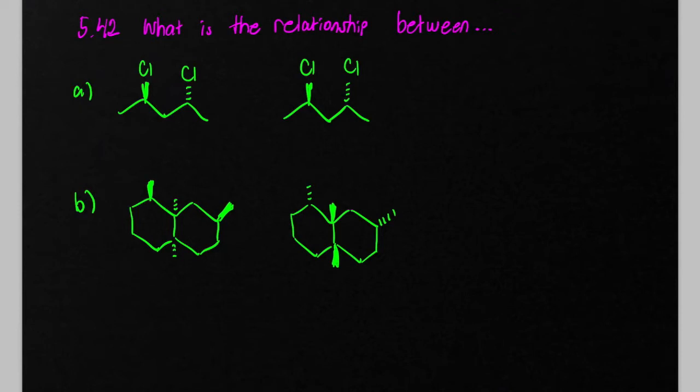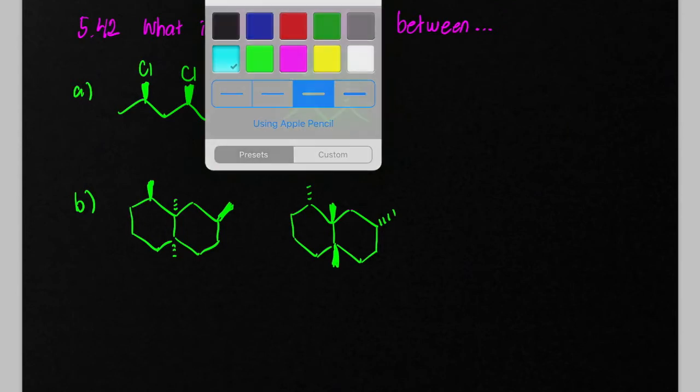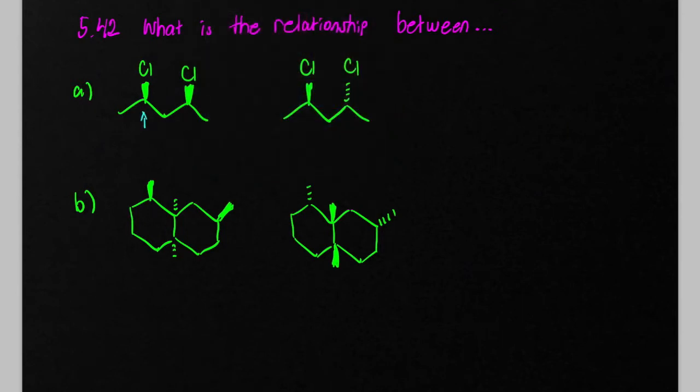When you look at these two molecules here, which I incorrectly drew, let's fix that. We have two wedges and then a wedge and a dash. So what we have is this is the same. This is the same, and we're only inverting one of the many stereogenic centers, so these two will be classified as diastereomers.